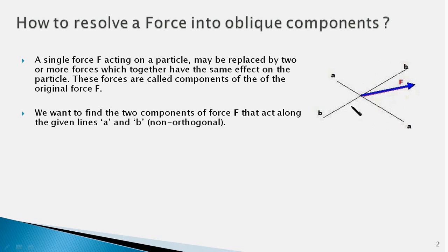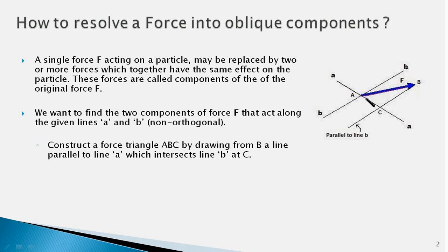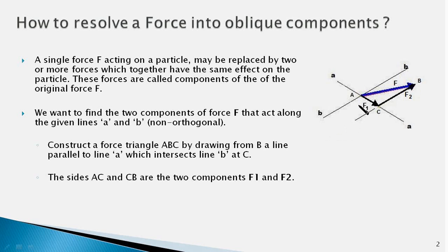Suppose we want to resolve force F into components along lines A and B, and instead of constructing a parallelogram we want to determine the magnitude of the components by trigonometry. The first step is: from the tip of force F, draw a line parallel to line B. This line intersects line A at point C, giving us a force triangle ABC, in which one side is the given force F and the two other sides represent the components F1 and F2. Using the triangle rules we can determine the magnitude of these two components.